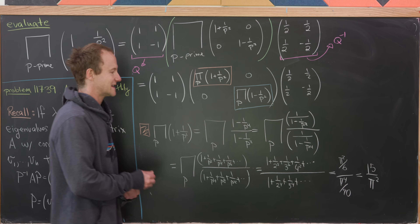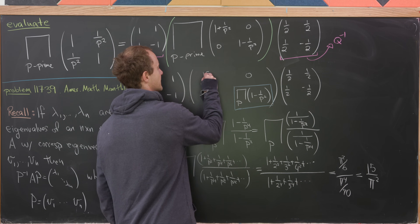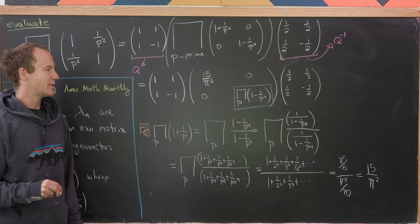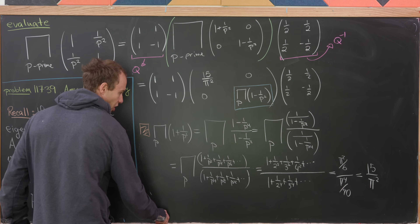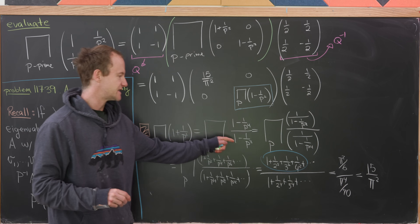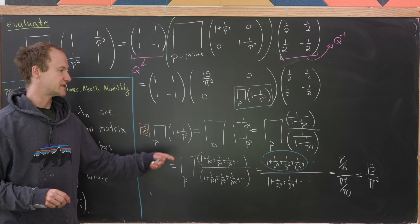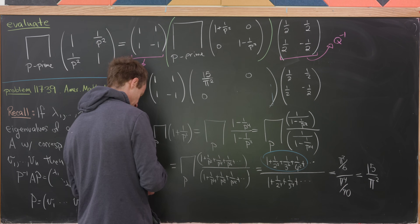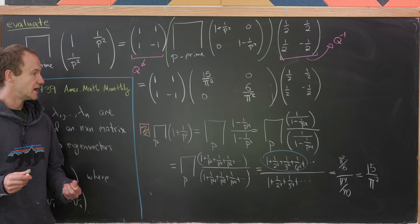The blue-boxed product — the product over all primes of (1 − 1/p²) — corresponds to the denominator in our earlier computation, giving 6/π² instead of π²/6. We plug in 15/π² for the top diagonal entry and 6/π² for the bottom diagonal entry.